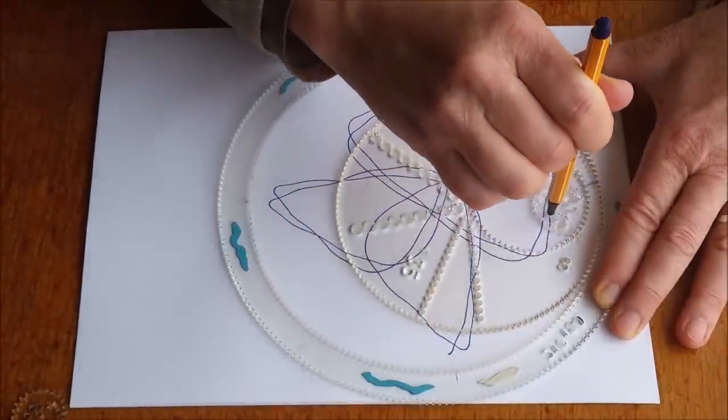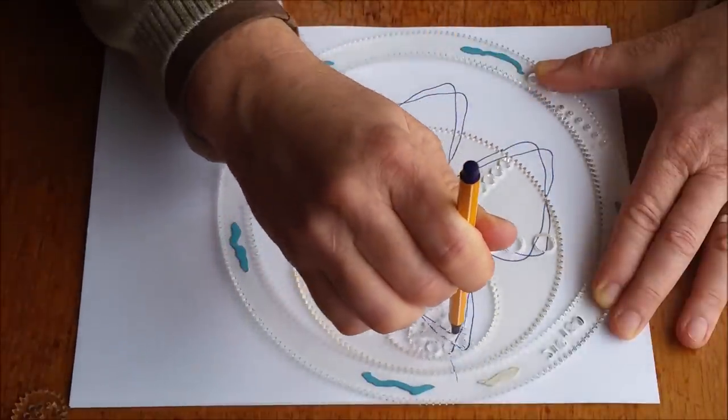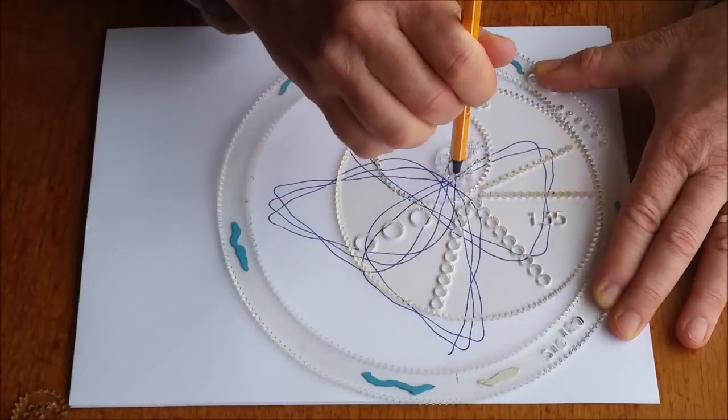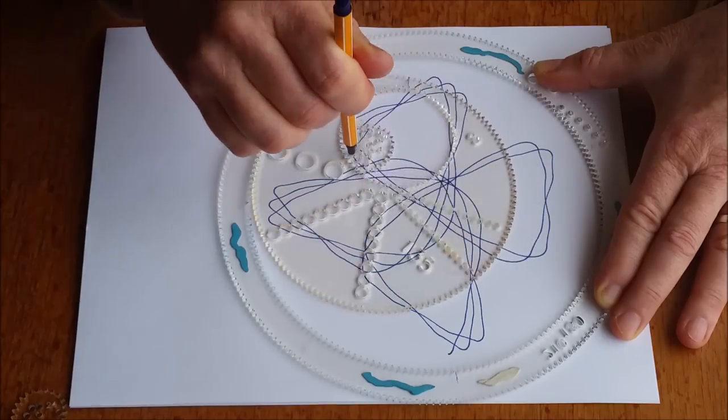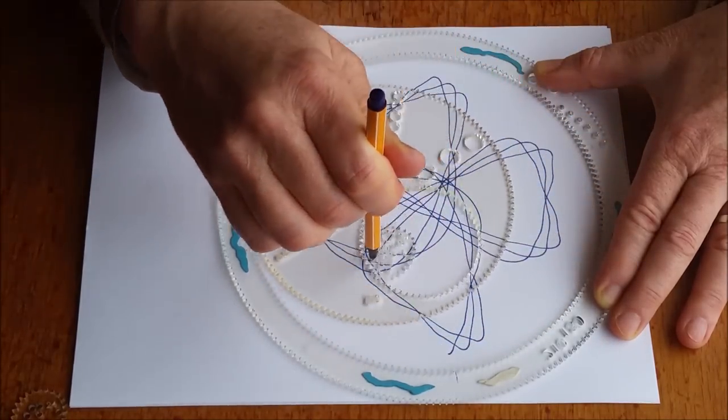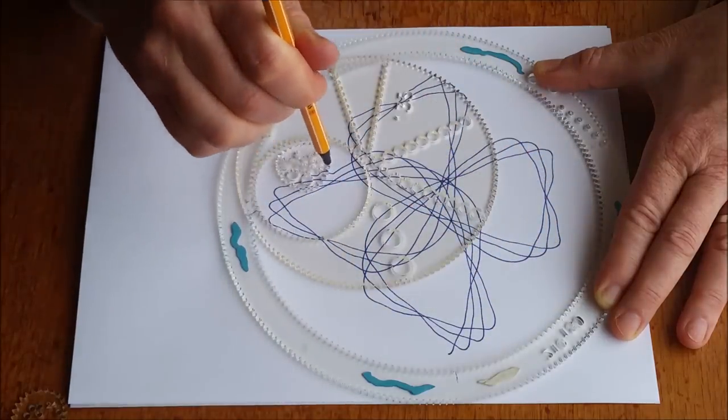And compared to using the smaller outer wheel, this time wheel number 135, the larger wheel here, has more freedom to move around the large ring. And it comes back to the same place except it looks a little different. Oh no!